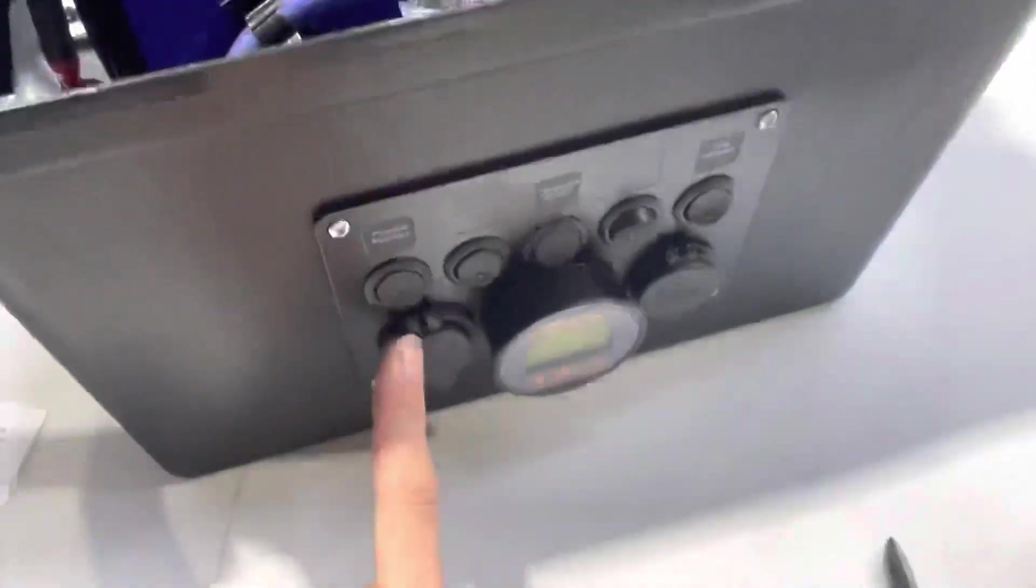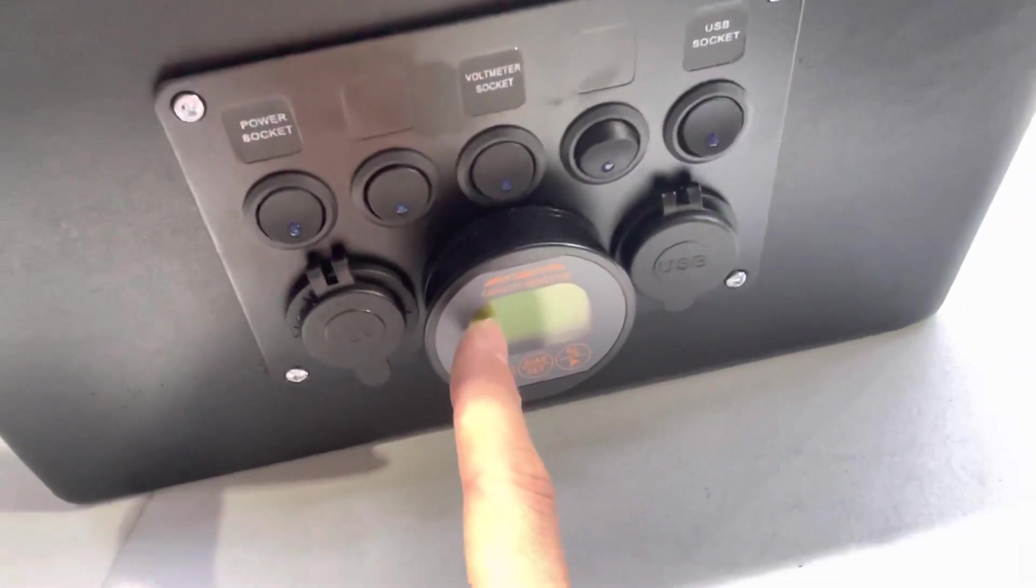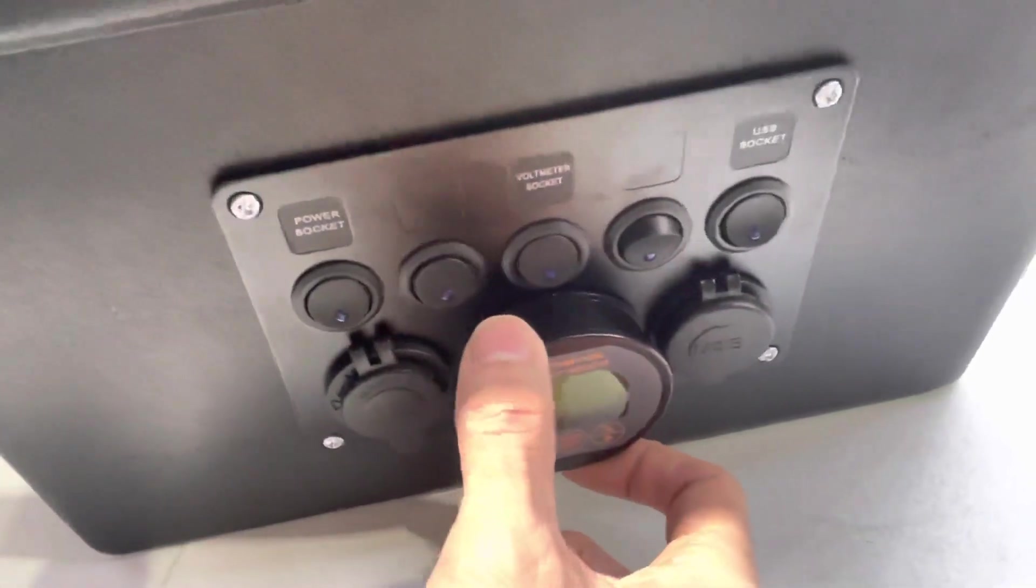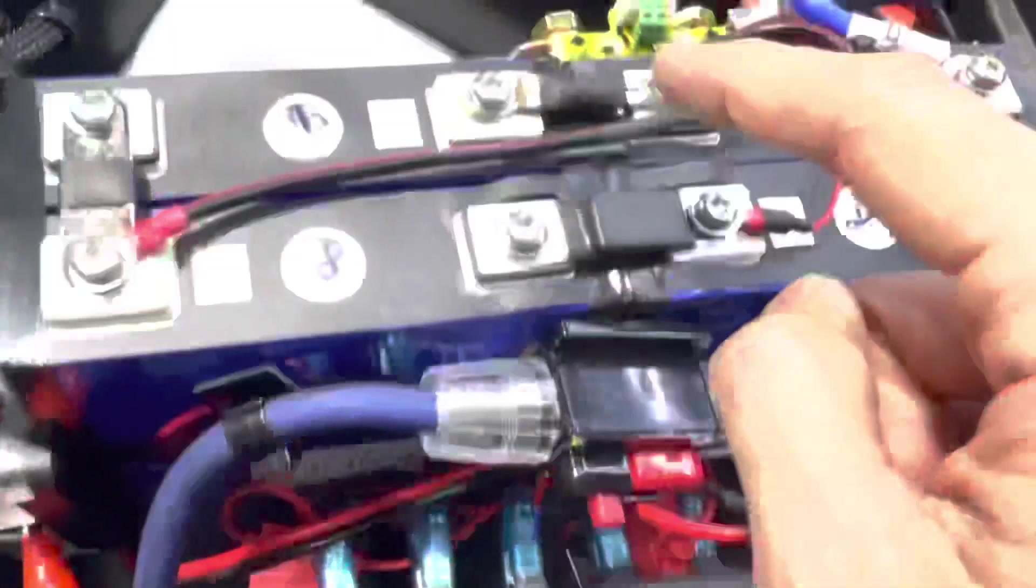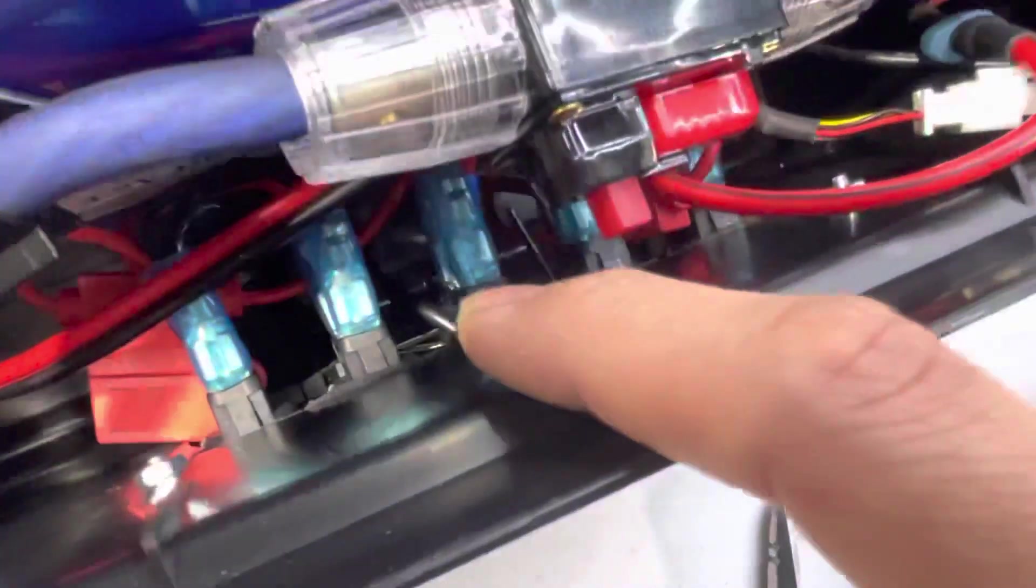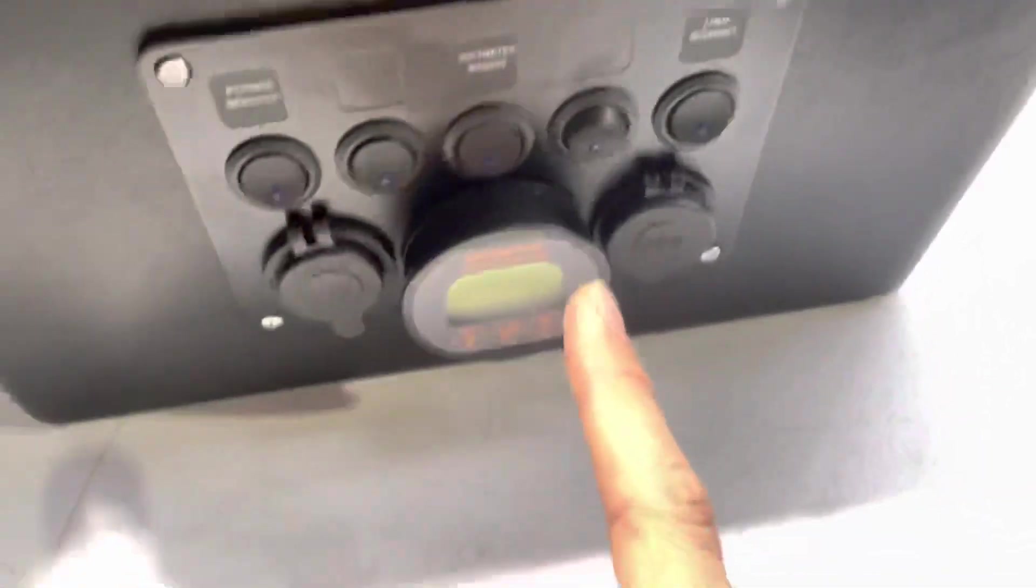This front panel I think it was 18 dollars, it comes with all the stickers and all that. There was actually a voltmeter that was here, I took that out, I made this hole a little bigger.